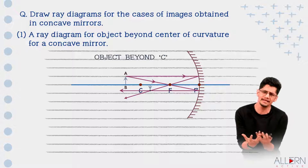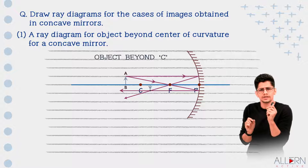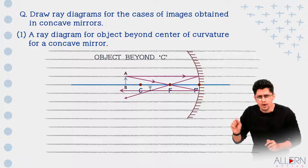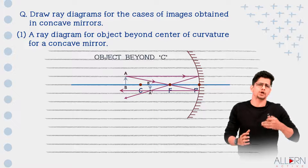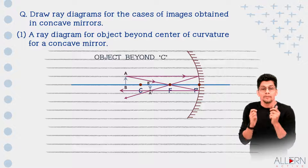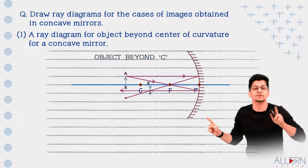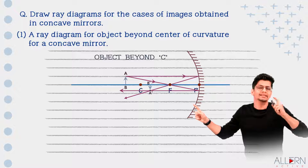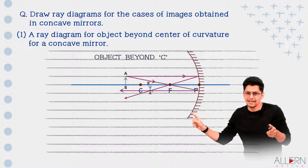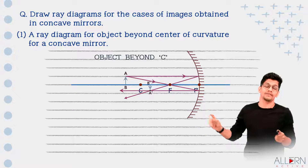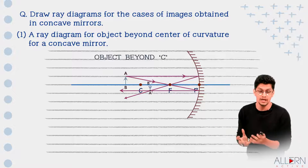We'll name the image as A-dash and B-dash. We use A-dash and B-dash — not PQ or XY — because we need to specify that the image is an inverted image. A was at the top; its image A-dash is now at the bottom. Similarly, B was below A but now it is above A-dash, confirming that the image is an inverted image.